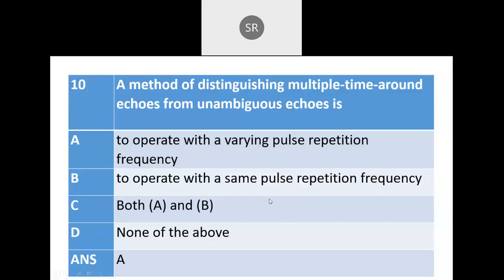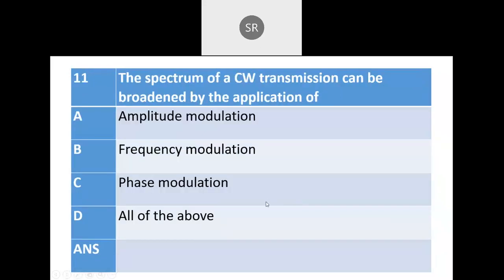Next: The spectrum of a CW transmission can be broadened by: A — amplitude modulation, B — frequency modulation, C — phase modulation, or D — all of the above. While spectrum is generally related to frequency, spectrum broadening specifically occurs through phase modulation. The correct answer is C — phase modulation.